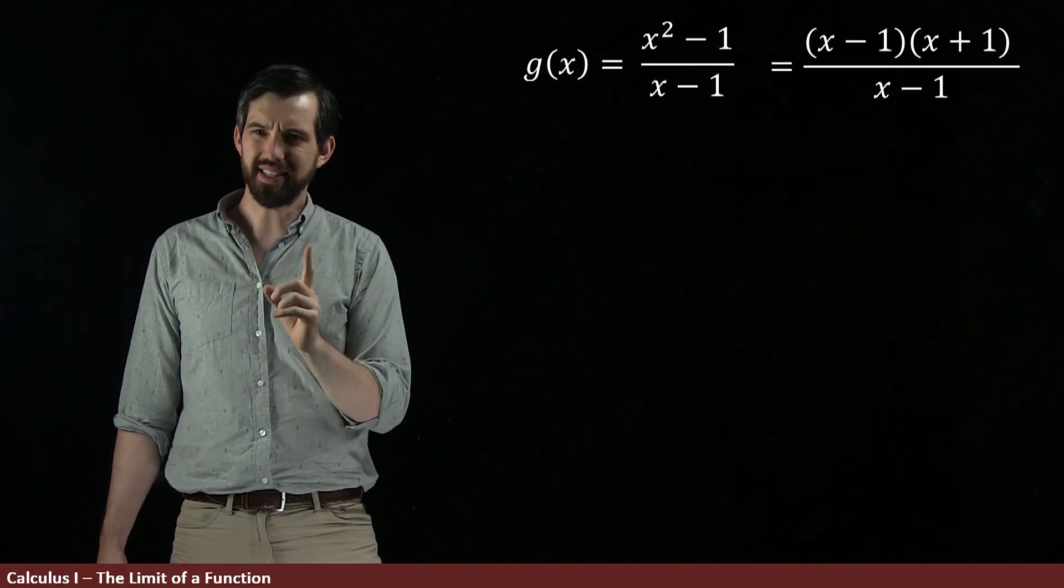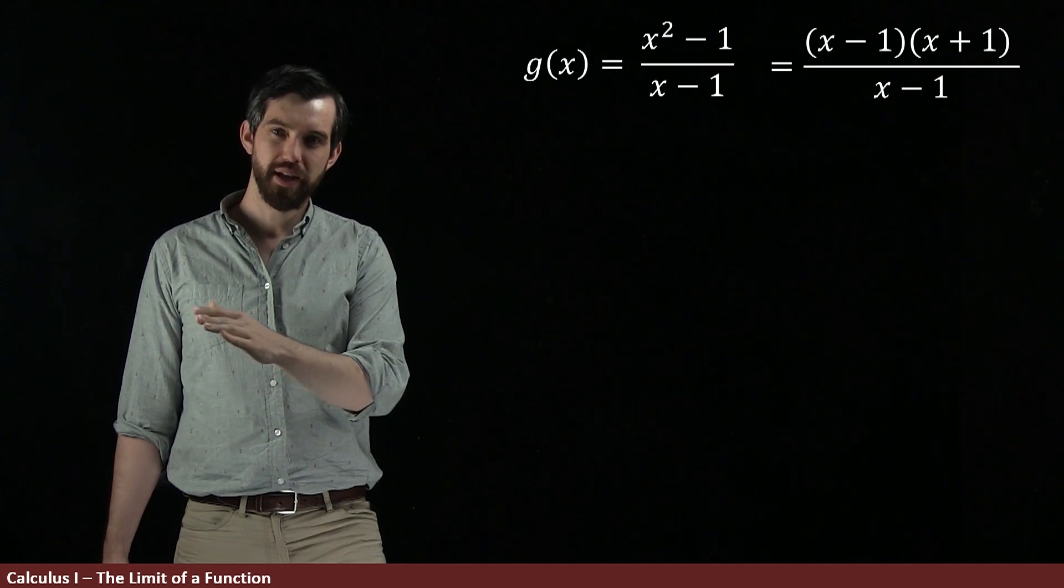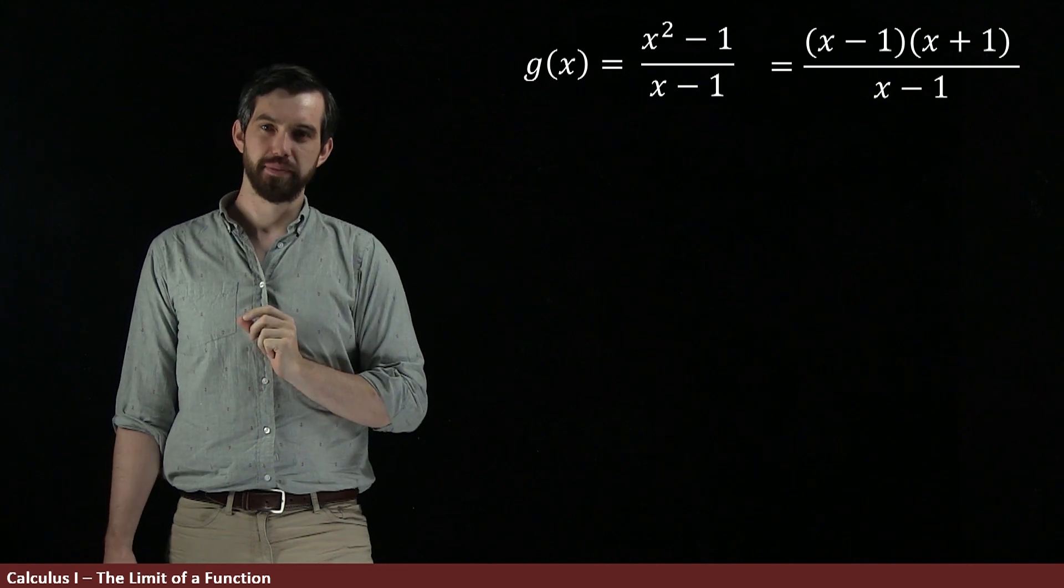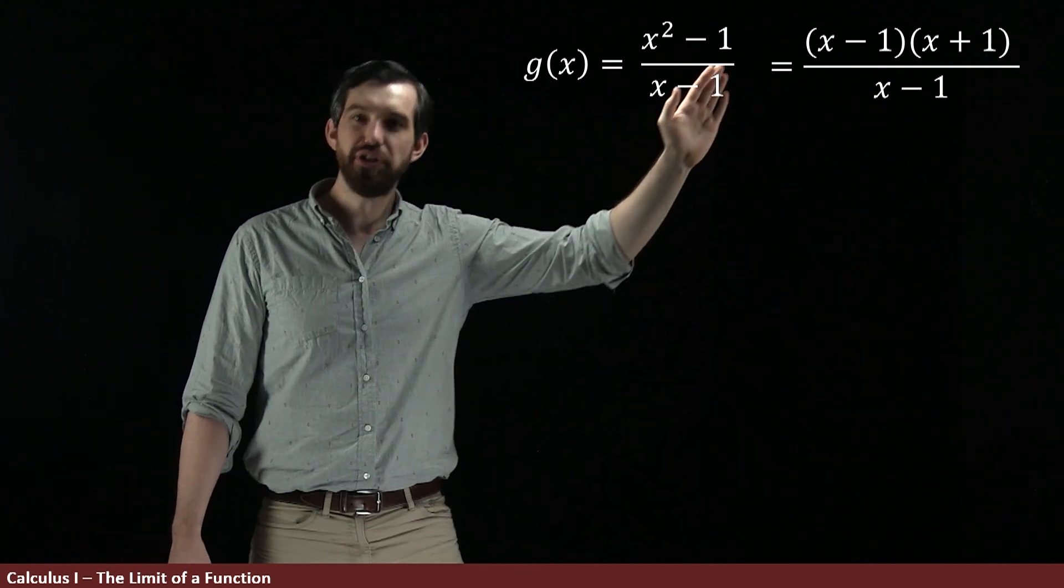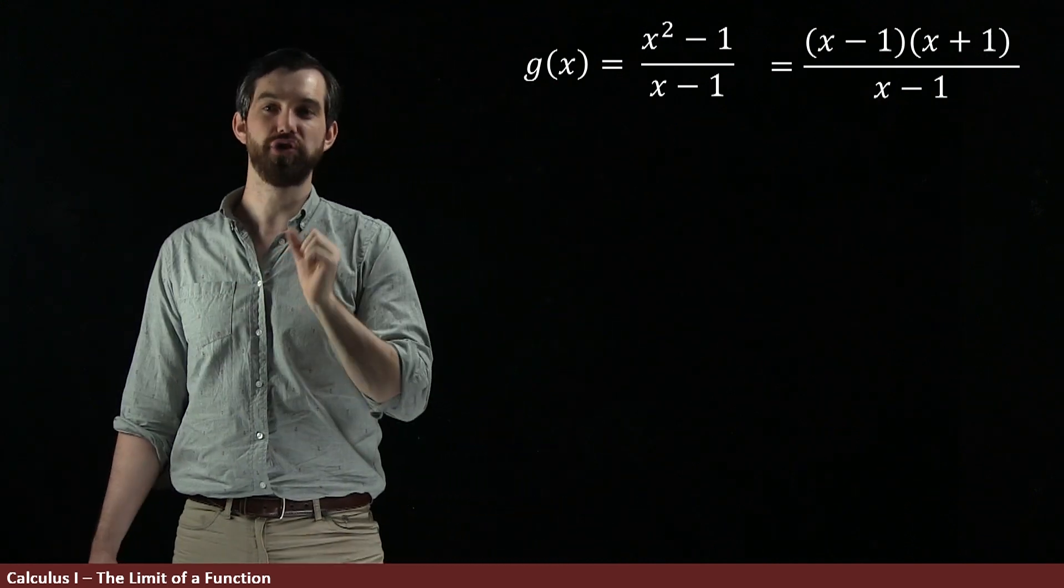So, is this the same thing as f of x or is it a different thing from f of x? It's almost the same in my mind, but there's a very slight difference. This function here, I can do this canceling whenever x minus 1 is not 0.